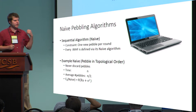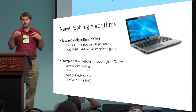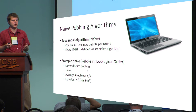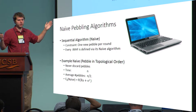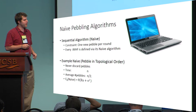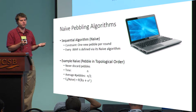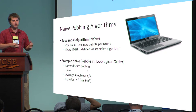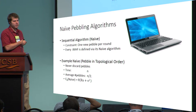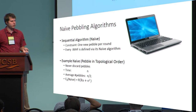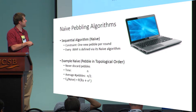A data-independent memory hard function is given not only by a graph but also by a naive pebbling algorithm — the algorithm the honest party is supposed to use. The naive pebbling algorithm should be sequential, placing only one new pebble on the graph during each round. Many iMHFs are just defined by the naive pebbling algorithm, where you pebble the graph in topological order never removing pebbles. The time is n rounds to pebble the last node, and on average you have about n/2 pebbles on the graph during each step, so the energy complexity scales as n².